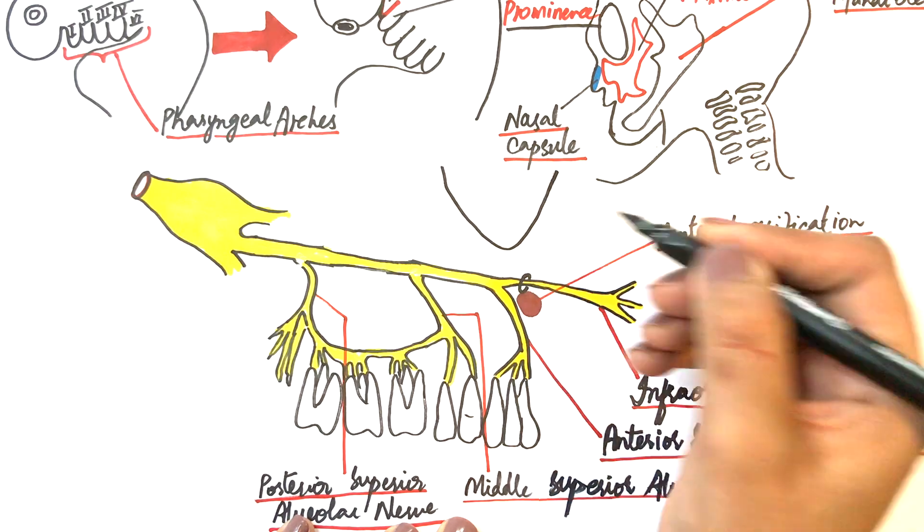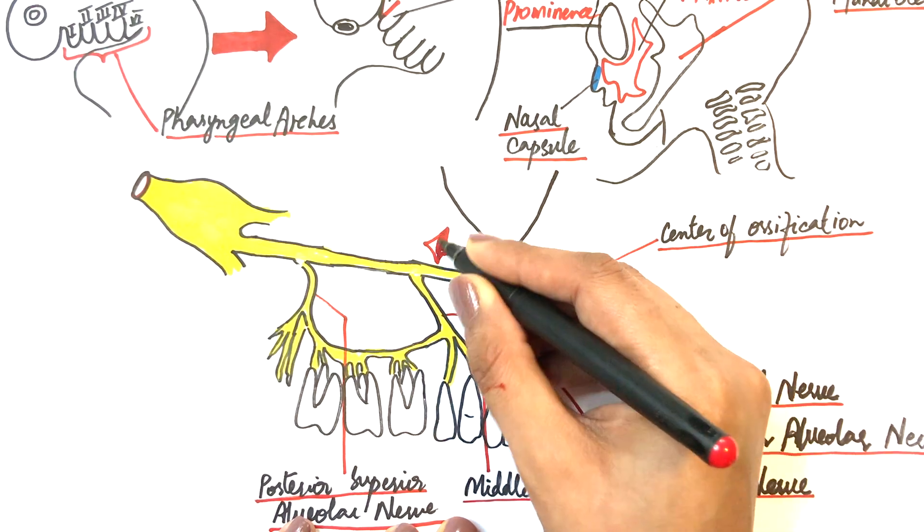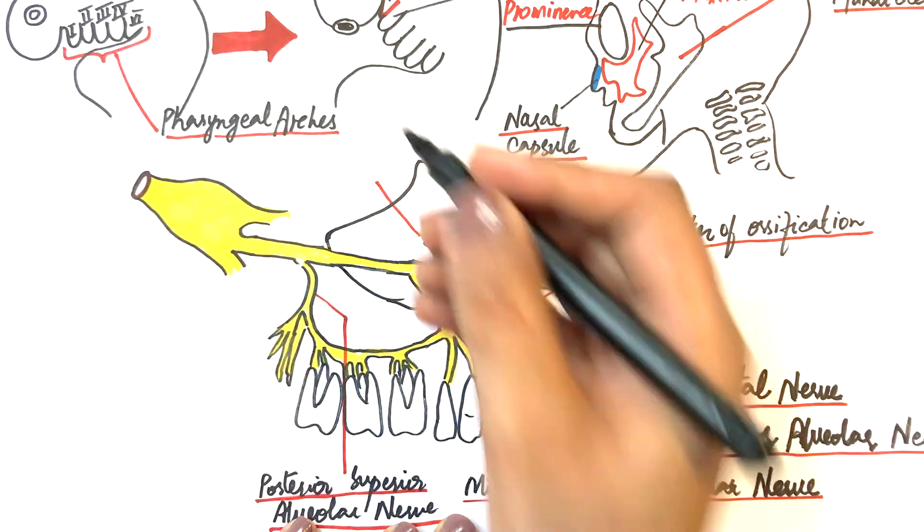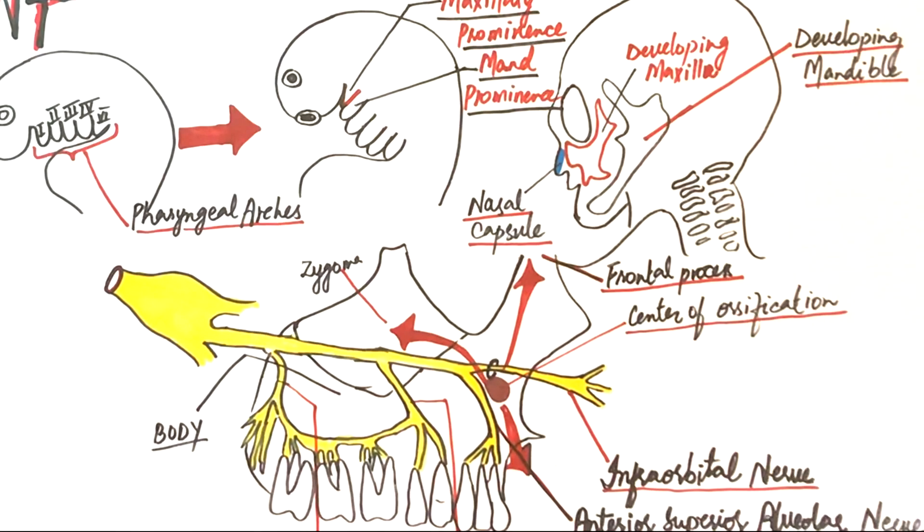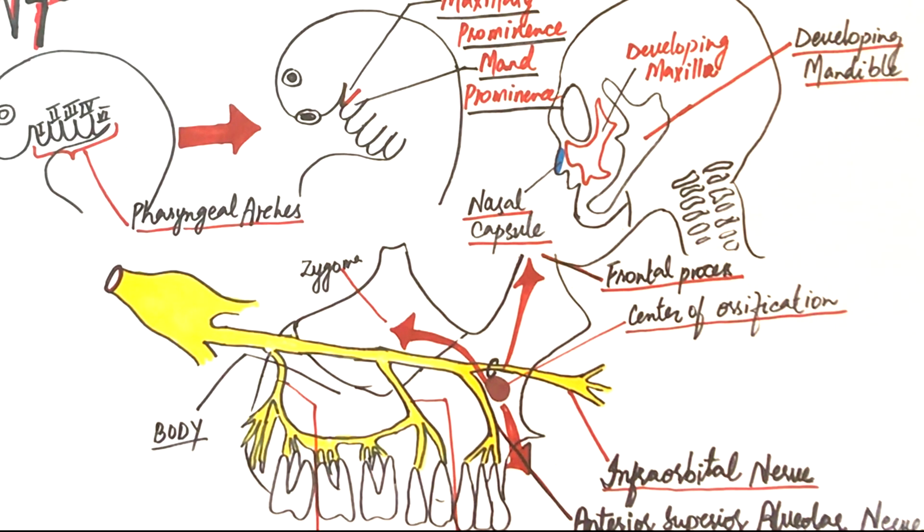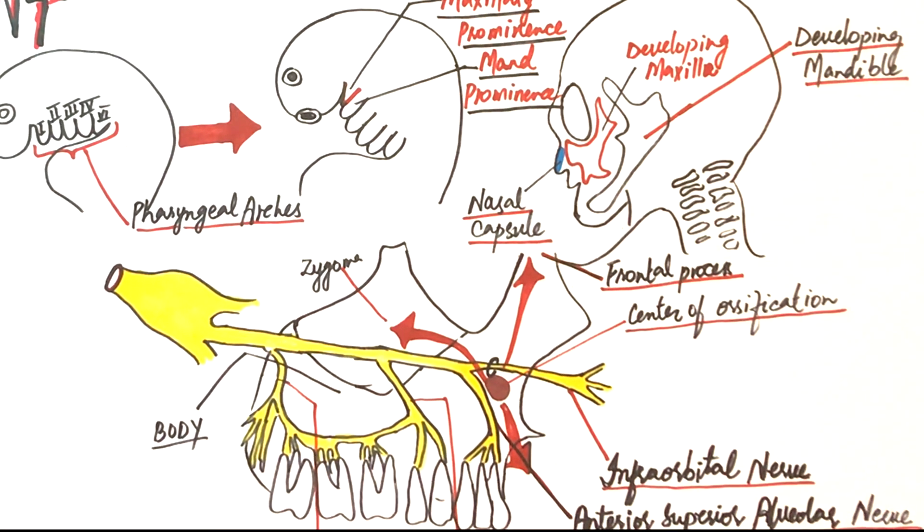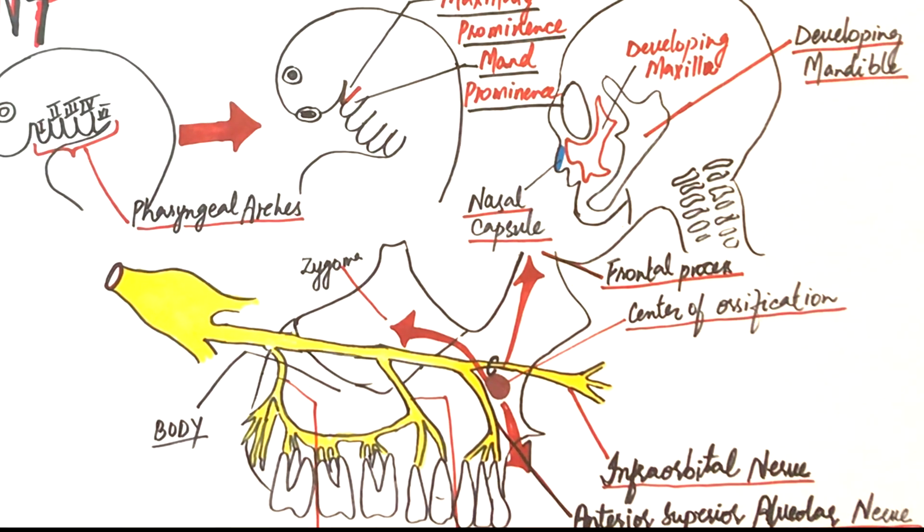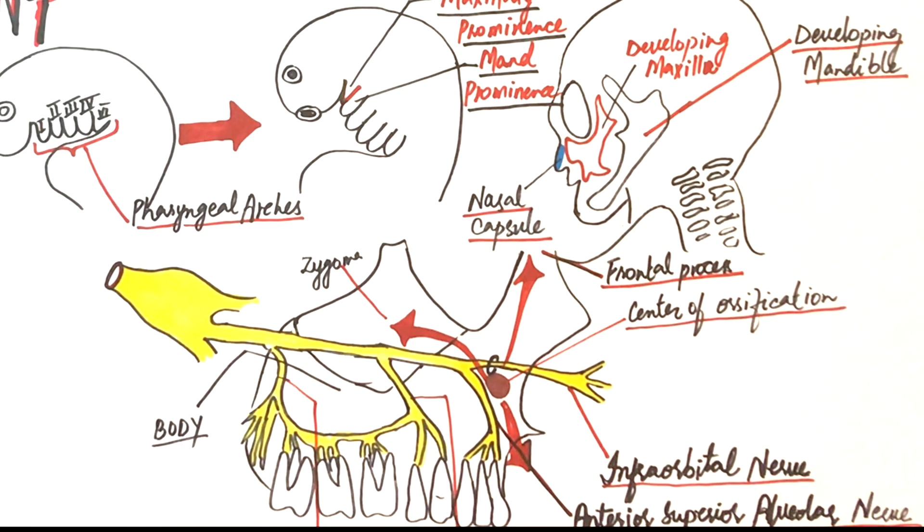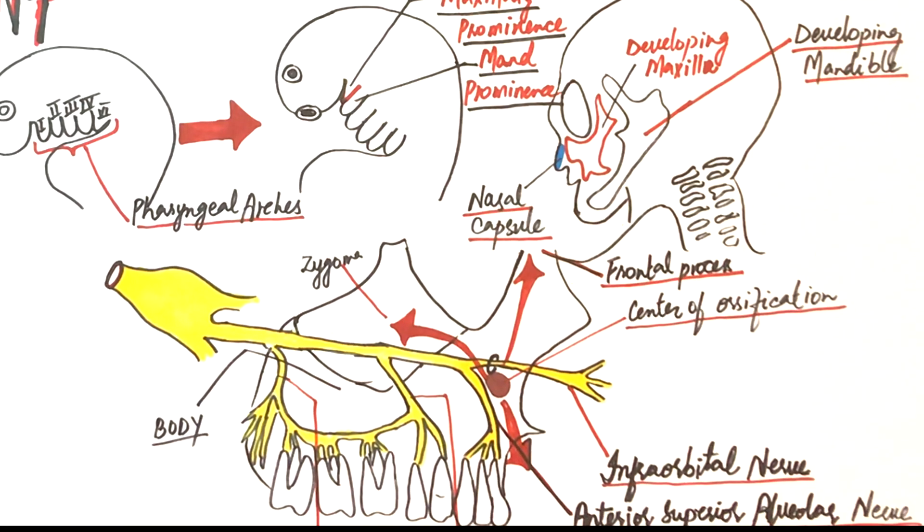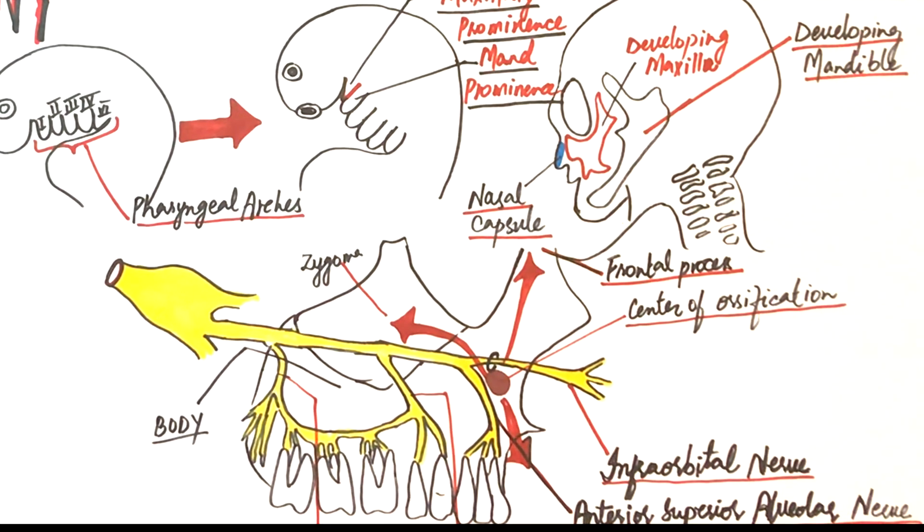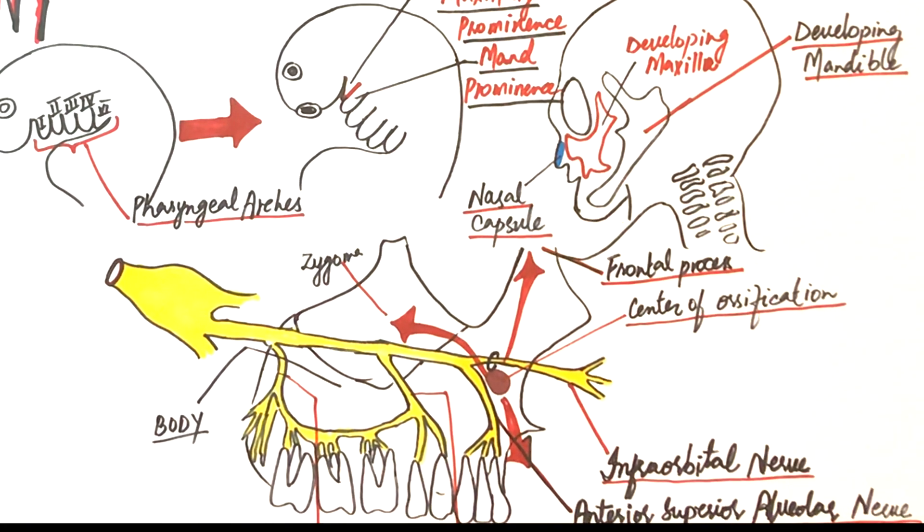Ossification spreads posteriorly below the orbit and towards the developing zygoma, anteriorly it spreads towards the future incisor teeth, superiorly to form the frontal process, and then it also spreads towards the palatine process to form the hard palate, and then towards the main body of the maxilla. Later on, a secondary cartilage contributes to the development of the maxilla. This secondary cartilage is present at the zygomatic process of the maxilla and it persists for a short time and adds considerably to the development of the maxilla.